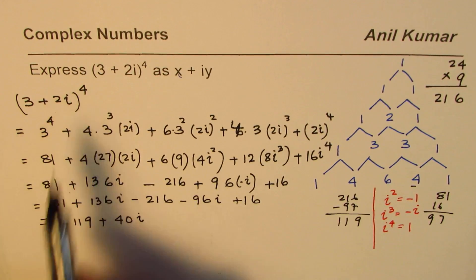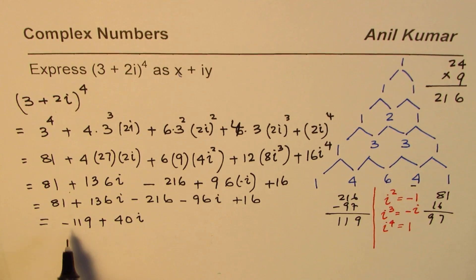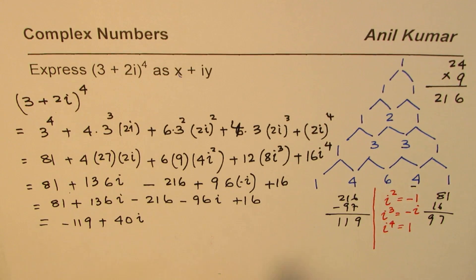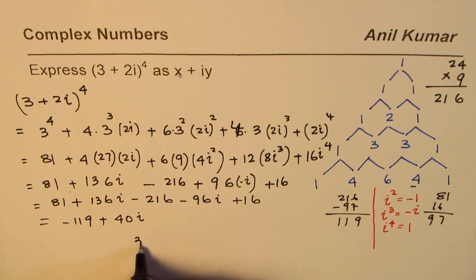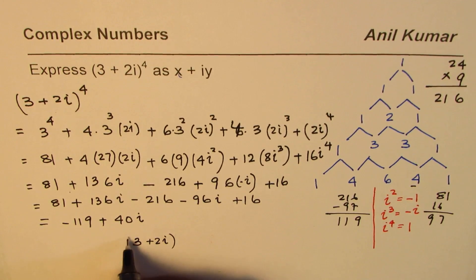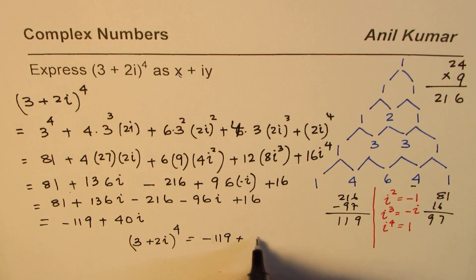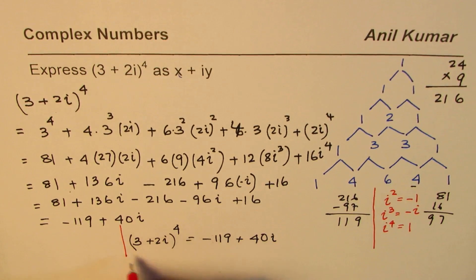So the expression 3 plus 2i to the power of 4 can be written as minus 119 plus 40i. So let me rewrite the answer, which is 3 plus 2i to the power of 4 equals minus 119 plus 40i.